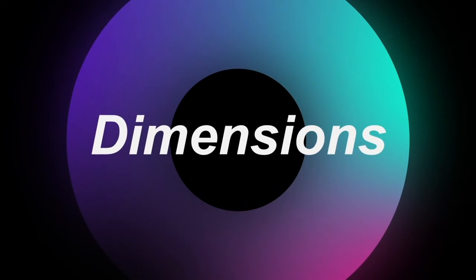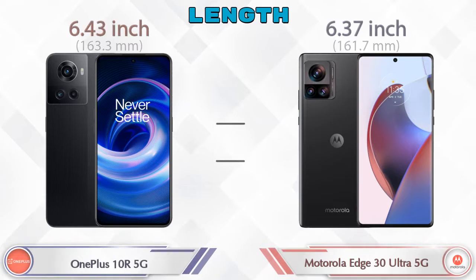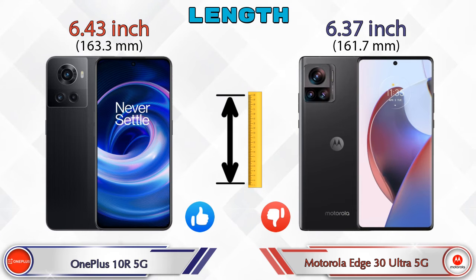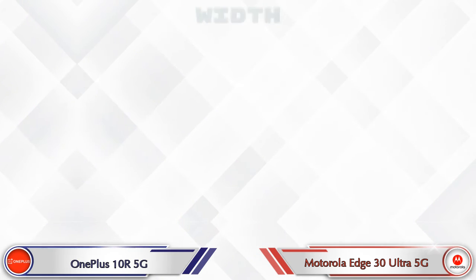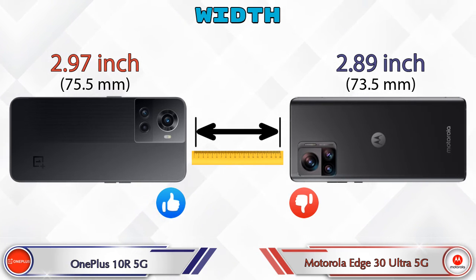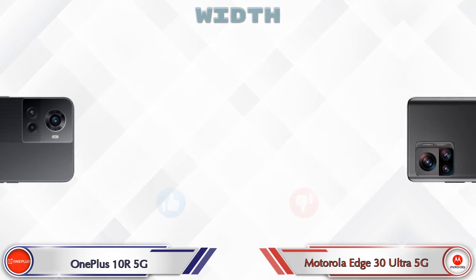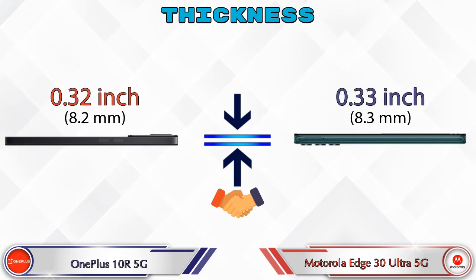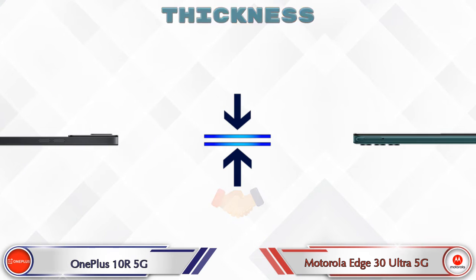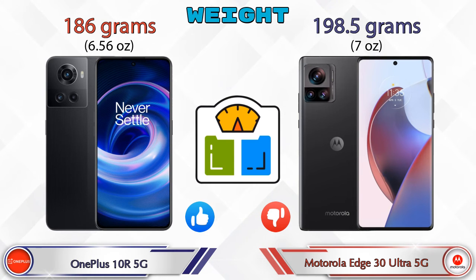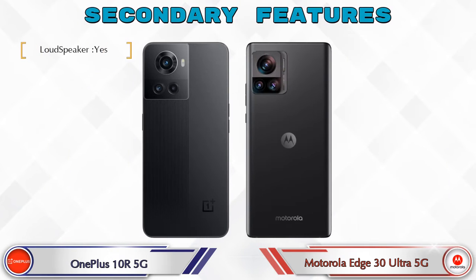Now let's check the dimensions. The 10R 5G has a length of 6.43 inches, while the 30 Ultra 5G is slightly shorter at 6.37 inches. Width is 2.97 inches on the 10R 5G versus 2.89 inches on the 30 Ultra 5G. Thickness is very similar — 0.32 inches on the 10R 5G and 0.33 inches on the 30 Ultra 5G. The 10R 5G weighs 186 grams while the 30 Ultra 5G is heavier at 198.5 grams.